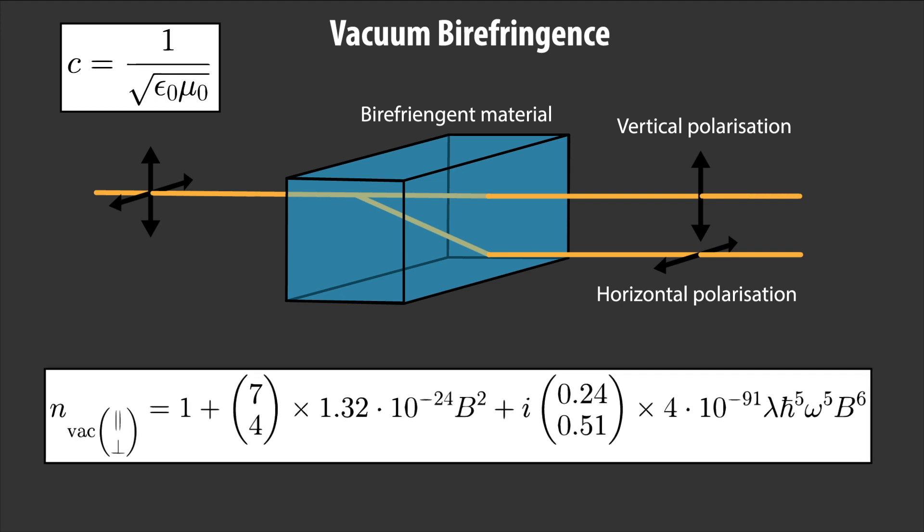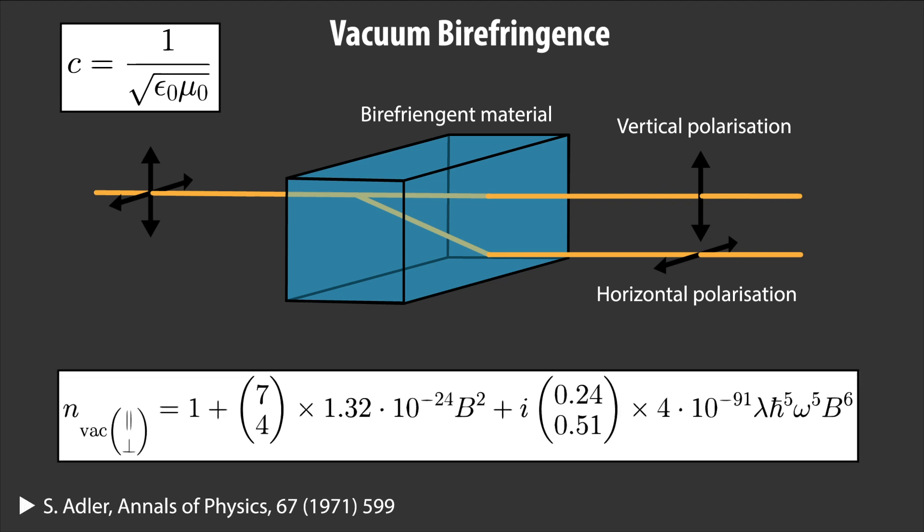Well, it turns out that the refractive index of the vacuum actually depends on the magnetic field, and thus these values change.